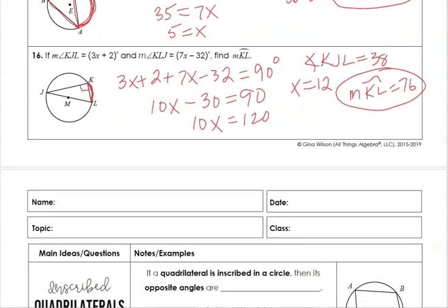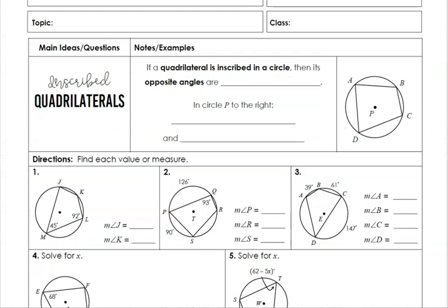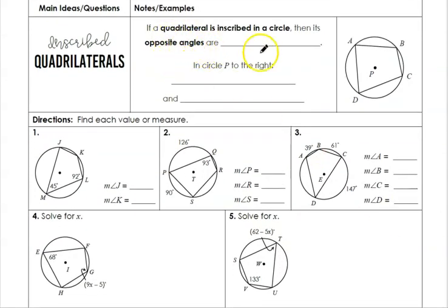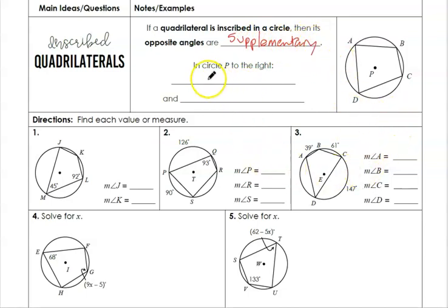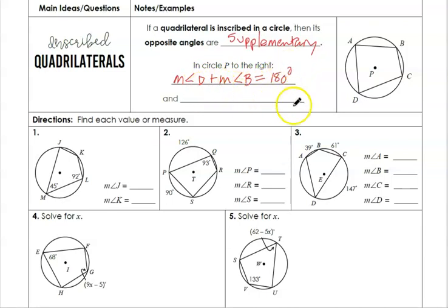Now let's talk about the property involving inscribed quadrilaterals. If a quadrilateral is inscribed in a circle, its opposite angles are supplementary. In circle P, we can say that angle D and angle B added together equal 180 degrees. Similarly, angle A and angle C also equal 180 degrees.